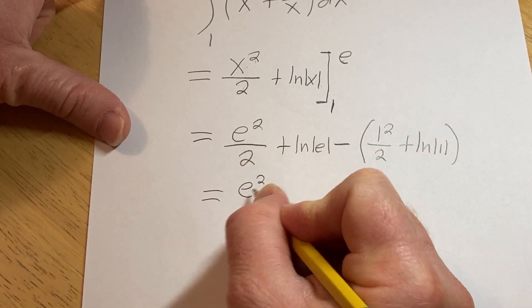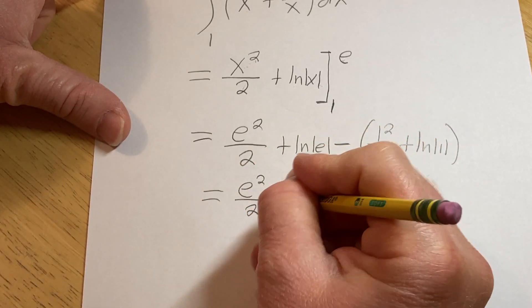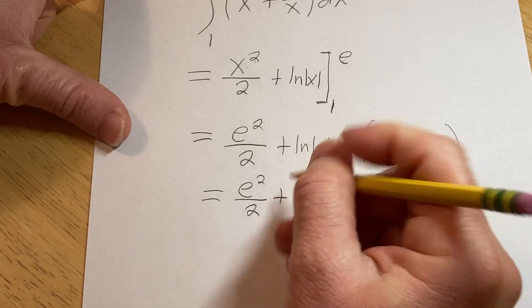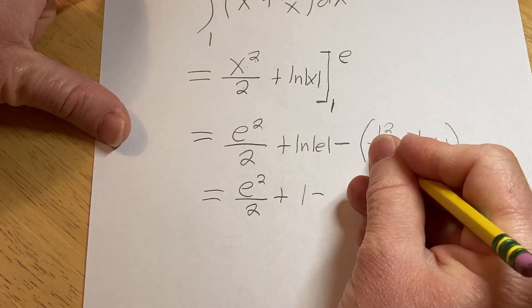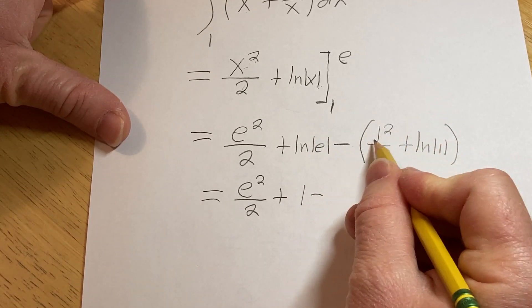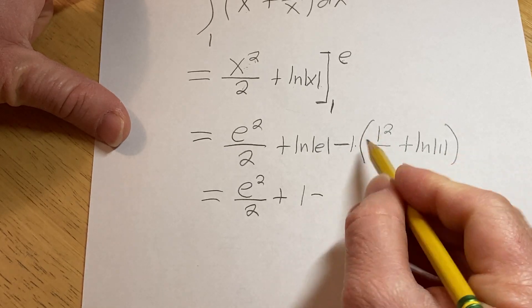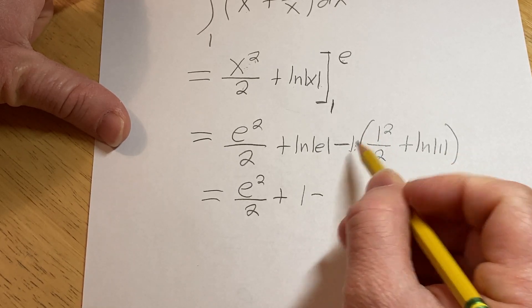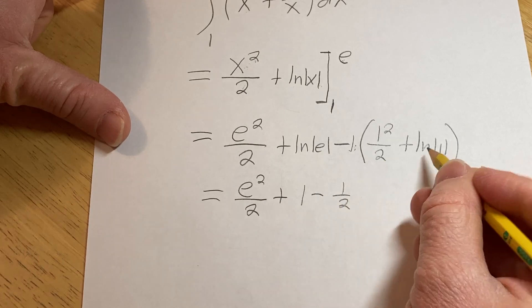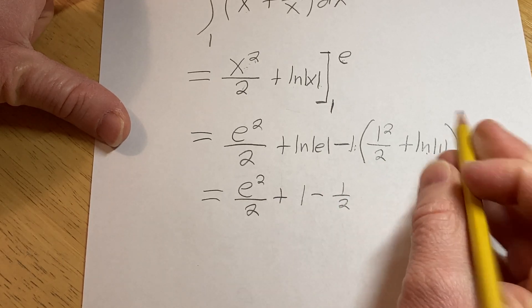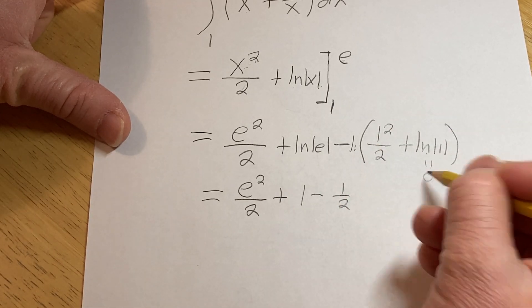So this is equal to e squared over 2 plus the natural log of e is 1 minus, and then let's just distribute this negative 1 here. There's an invisible minus 1, so times that it's going to give us minus 1 half. Natural log of 1 is 0, so I'm not going to write it, so this is 0.